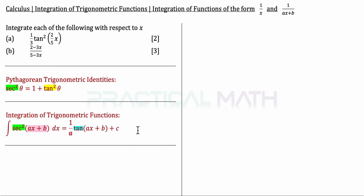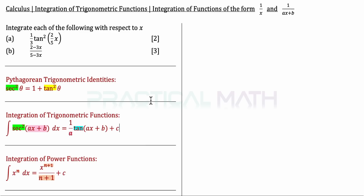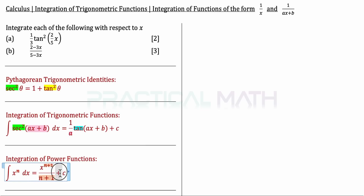Since we are also dealing with integrations, we want to revise the integration of power functions. The formula is: ∫xⁿ dx = x^(n+1)/(n+1) + C, where the power increases by 1 and we divide by the new power. The plus C refers to the arbitrary constant. Now with these three formulas in place, we can start solving part A.